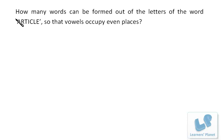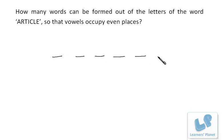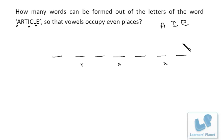Let's take this problem: how many words can be formed out of the letters of the word ARTICLE so that vowels occupy even places? We have 7 letters, so positions 1 through 7, with even places at positions 2, 4, and 6. The vowels in ARTICLE are A, I, and E, and the remaining consonants are R, T, C, and L.